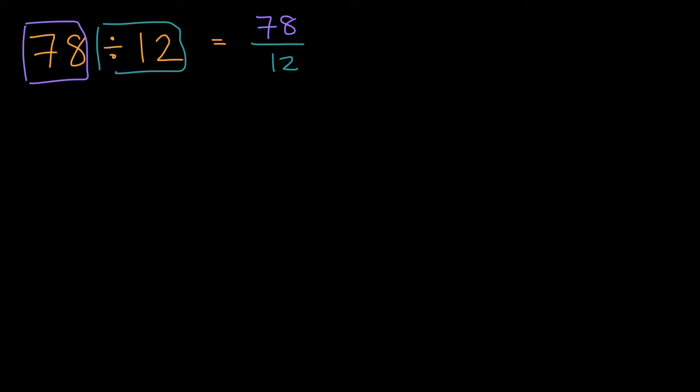But we can write this numerator as, instead of 78, I can write it as a multiple of 12 plus whatever's left over, so 72 plus 6, that's the same thing as 78, so it's that divided by 12.